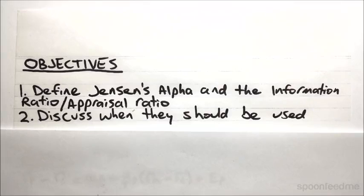So the Sharpe and Traynor indices were a couple of options we had for evaluating the performance of a portfolio of risky assets. Alternatively, we have Jensen's alpha and the information or appraisal ratio. We're going to define what those are today, and then talk about when we should use these as opposed to what we looked at earlier.